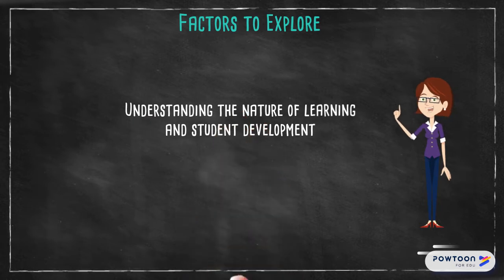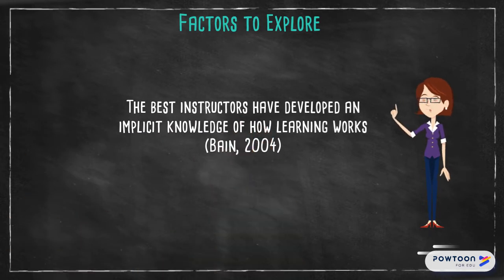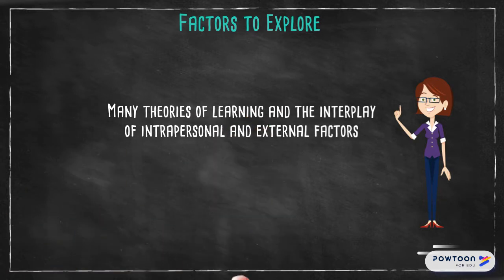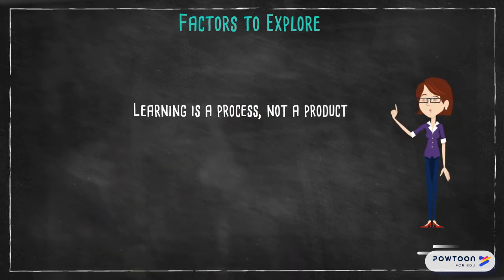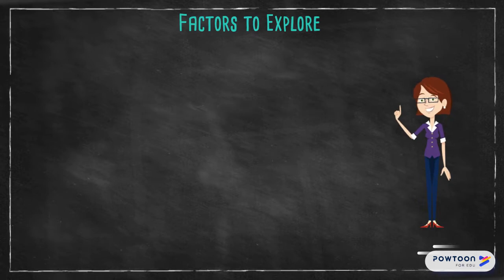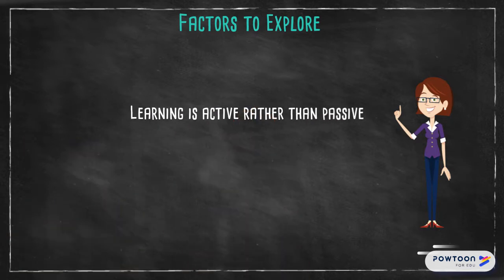The first factor to explore is understanding the nature of student learning and student development. While there are many existing and emergent theories that explain this phenomenon, the best instructors have also developed an implicit knowledge of how learning works. Ambrose, Bridges, DiPetro, Lovett, and Norman posited that learning is a process, not a product; that it involves change in knowledge, beliefs, behaviours, or attitudes; and that learning is active rather than passive — it is something that students have to do for themselves.